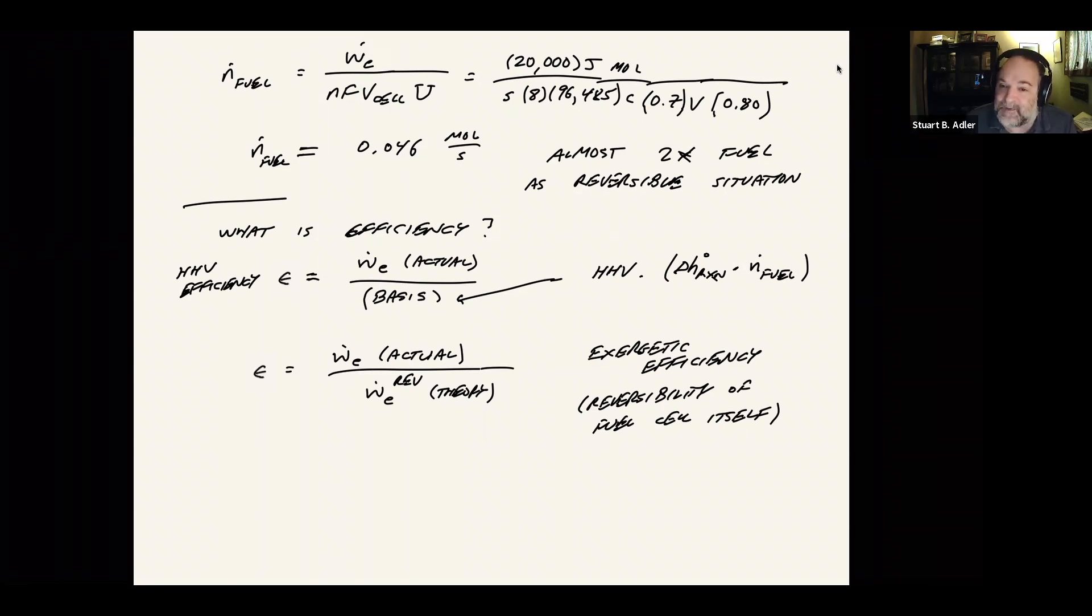HHV efficiency, I think is useful when you're comparing fuel cell technology to some other thing. So we're saying we're going to build the system, it's going to have a fuel cell in it, it's going to consume a certain amount of fuel to produce a certain amount of power. How do we compare that to a system that has no fuel cell in it? Typically people will use the HHV efficiency because they're comparing fuel cells to gas turbine cycles or something like that.